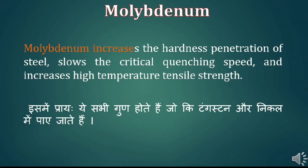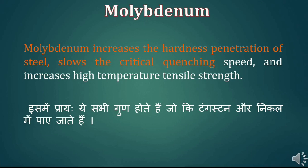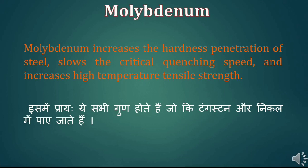Molybdenum increases the hardness penetration of steel, slows the critical quenching speed, and increases high temperature tensile strength.